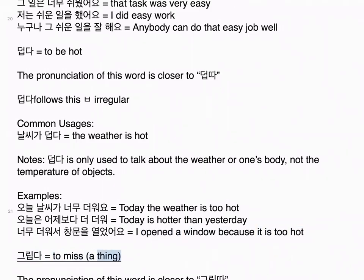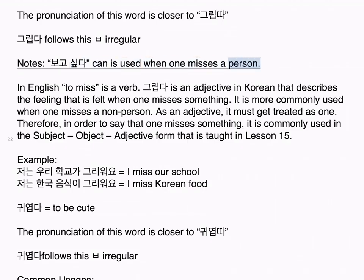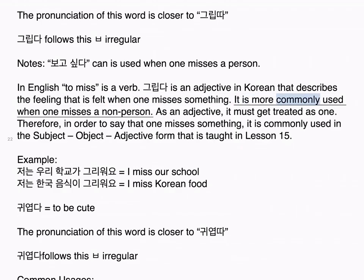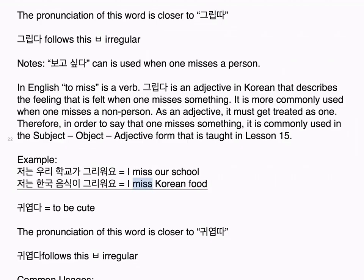그립다 means to miss a thing. The pronunciation is closer to 그립다. 그립다 follows the 비읍 irregular. Notes: 보고 싶다 is used when one misses a person. 그립다 is an adjective in Korean that describes the feeling felt when one misses something. It is more commonly used when one misses a non-person. As an adjective, it must be treated as one — it is commonly used in the subject-object-adjective form taught in Lesson 15. Examples: 저는 우리 학교가 그리워요. I miss our school. 저는 한국 음식이 그리워요. I miss Korean food.